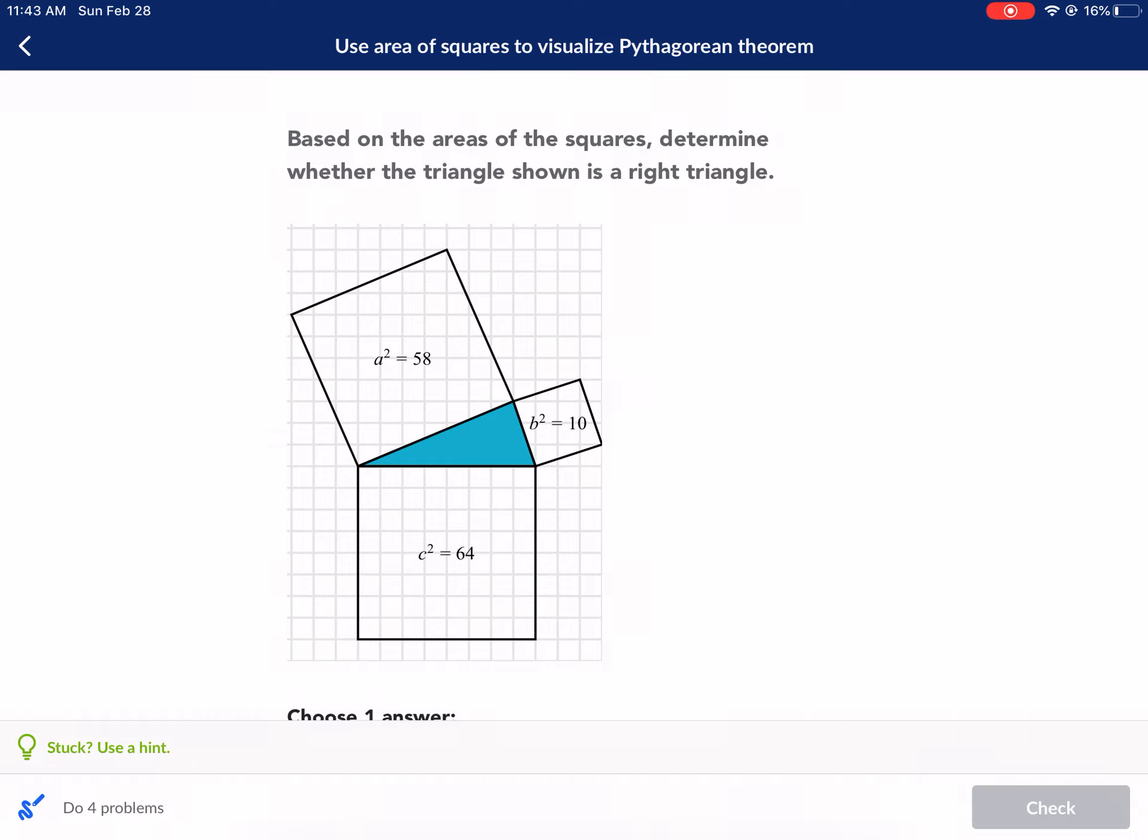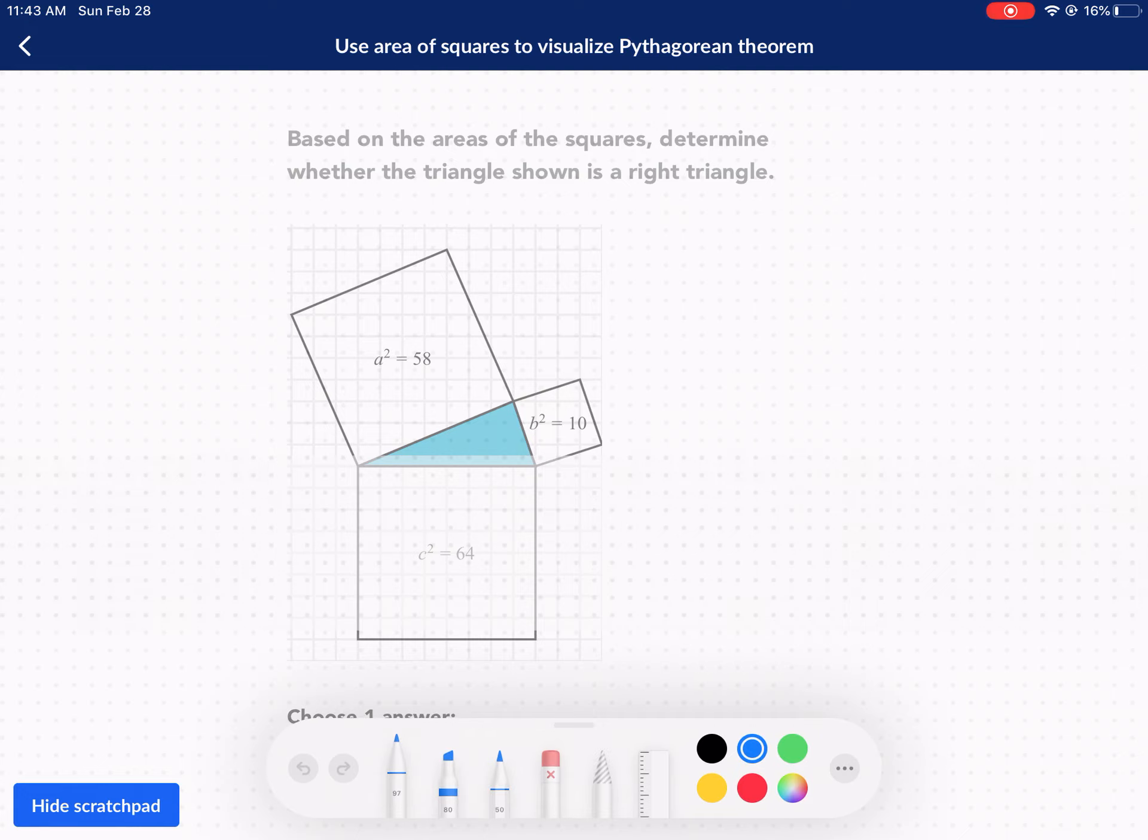Based on the areas of the squares, determine whether the triangle shown is a right triangle. One thing we need to know about Pythagorean theorem is the formula a squared plus b squared equals c squared, where c is your hypotenuse. That is your longest side in a right triangle.